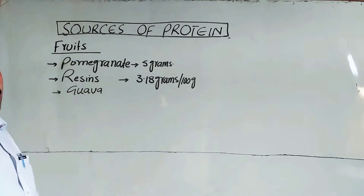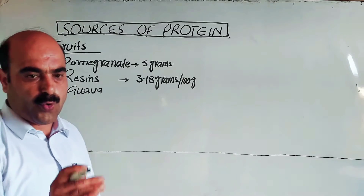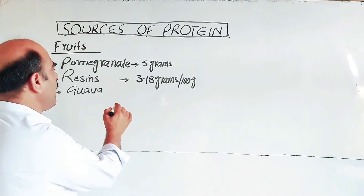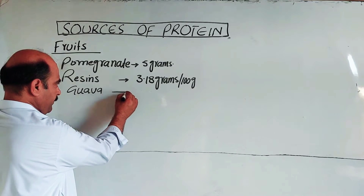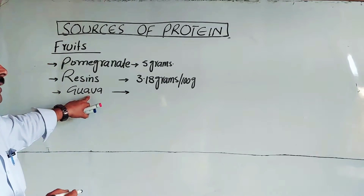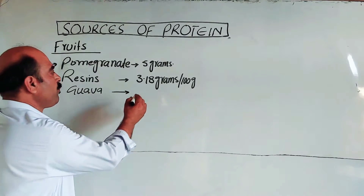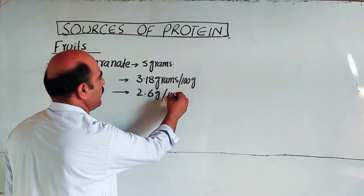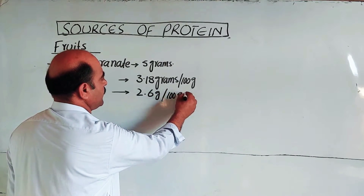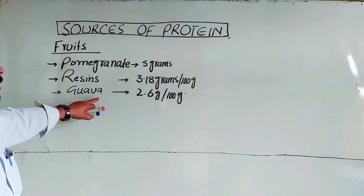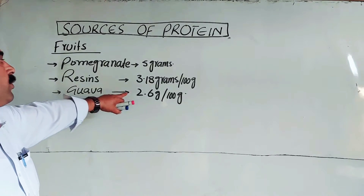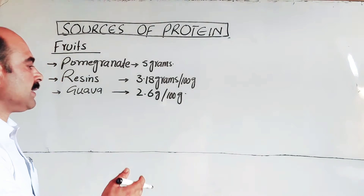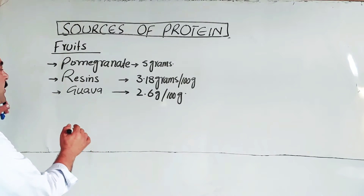Next is guava. Guava contains 2.6 grams of protein per 100 grams.